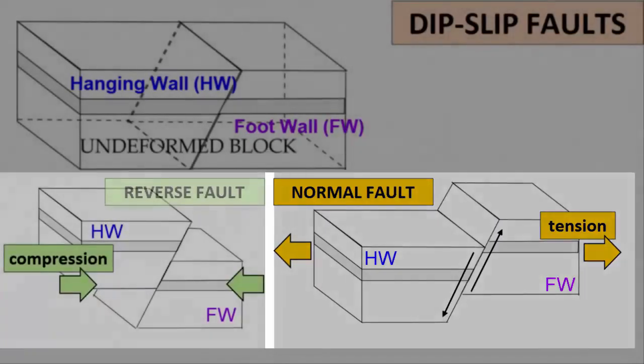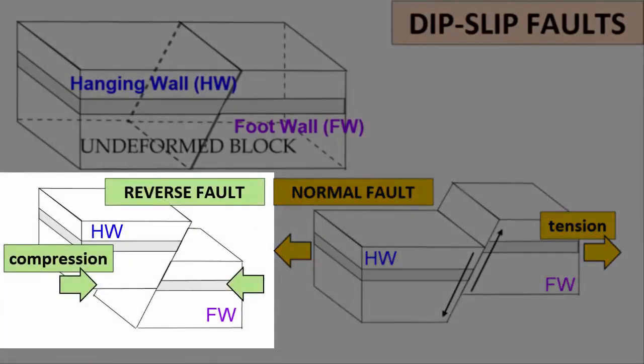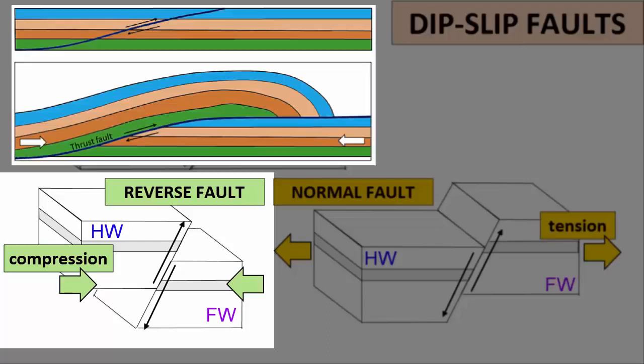Reverse faults are dip-slip faults caused by compression. As stress pushes rocks together, one rock block rides up atop another. If the hanging wall has moved upward relative to the foot wall, the fault is a reverse fault. Thrust faults are reverse faults that develop at very low angles, nearly horizontal, and thus may be difficult to recognize.